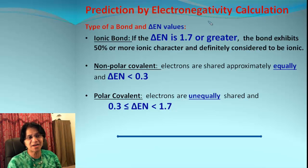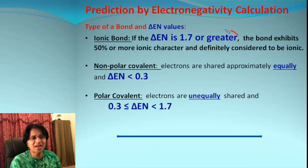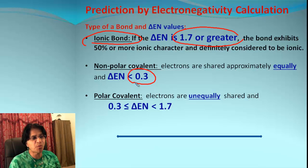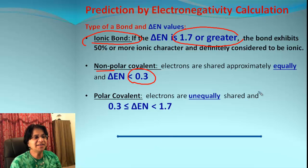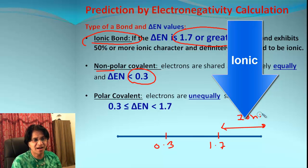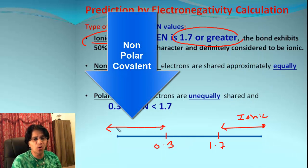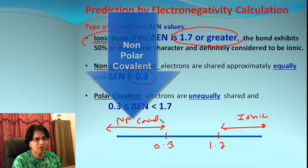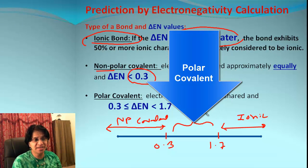Just to refresh your memory: delta En is the difference in electronegativity. Using the chart, we find the delta En value. If the value is 1.7 or greater, that is an ionic bond. If the value is less than 0.3, it is a nonpolar bond. So between 0.3 and 1.7 gives us a polar covalent bond. The easy way to remember is to draw a number line and mark those delta En values: anything beyond 1.7 is ionic, anything below 0.3 is nonpolar covalent, and anything between is polar covalent.